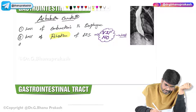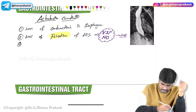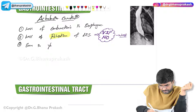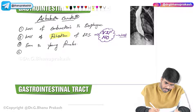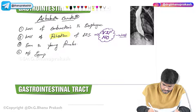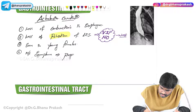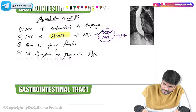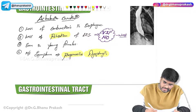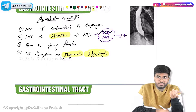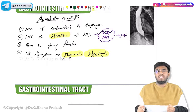For MCQs: Achalasia Cardia is seen in both males and females, but females are most commonly affected — specifically young females. The most common symptom is dysphagia, and the classical description is progressive dysphagia. Progressive dysphagia means initially this female has difficulty swallowing solid foods, and later on even swallowing liquid foods becomes difficult — so there is progressive dysphagia for both liquids and solids.